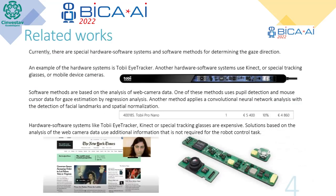Regarding related works: currently there are special hardware-software systems and software methods for determining gaze direction. An example of a hardware system is the Tobii eye tracker. Other hardware-software systems use Kinect, special tracking glasses, or mobile device cameras. Software methods are based on the analysis of web camera data. One method uses pupil detection and mouse cursor data for gaze estimation by regression analysis. Another method applies a convolutional neural network with detection of facial landmarks and spatial normalization. Hardware-software systems like Tobii eye tracker, Kinect, or spatial tracking glasses are expensive.